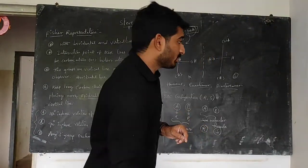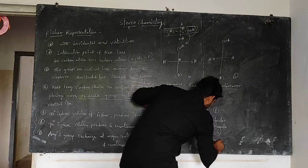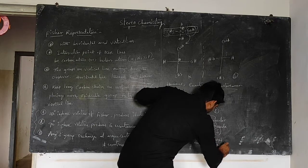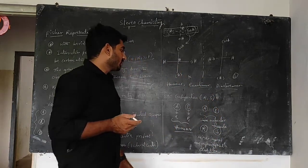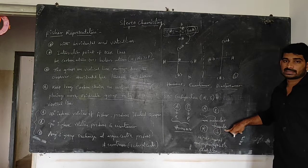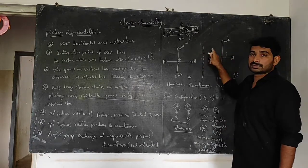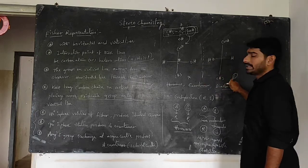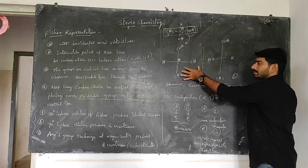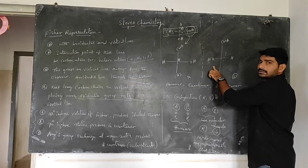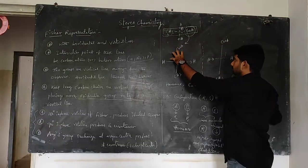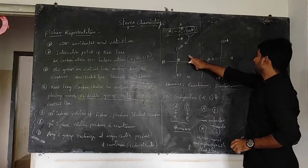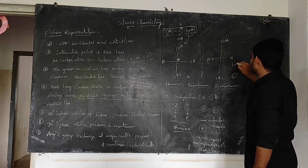The best example of enantiomers is right hand and left hand — mirror images that are non-superimposable. For lactic acid, molecule A is exactly the mirror image of molecule B. If you bring molecule B and place it on A, the OH falls on hydrogen and hydrogen falls on OH — they are mirror images and non-superimposable, confirming they are enantiomers.